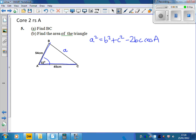So BC squared is going to be 45 squared plus 54 squared minus 2 times 45 times 54 cos 32 degrees. Making sure your calculator is in degrees mode, we're going to work all that out.